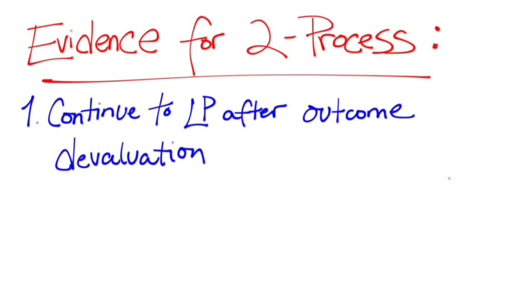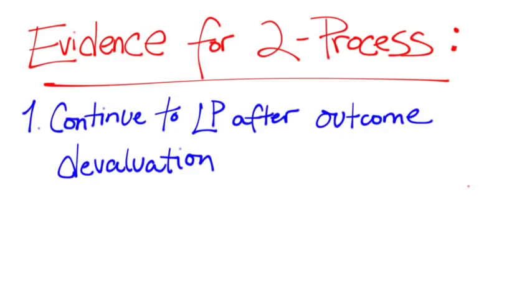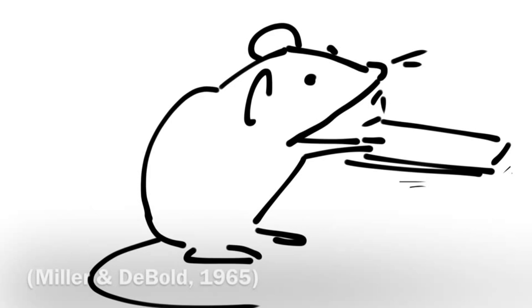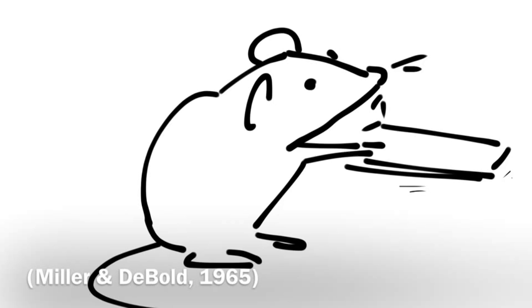There is a second line of evidence in which it is a known fact that Pavlovian learning can affect instrumental learning. This phenomenon is aptly named Pavlovian instrumental transfer, or PIT. For example, consider the following scenario.